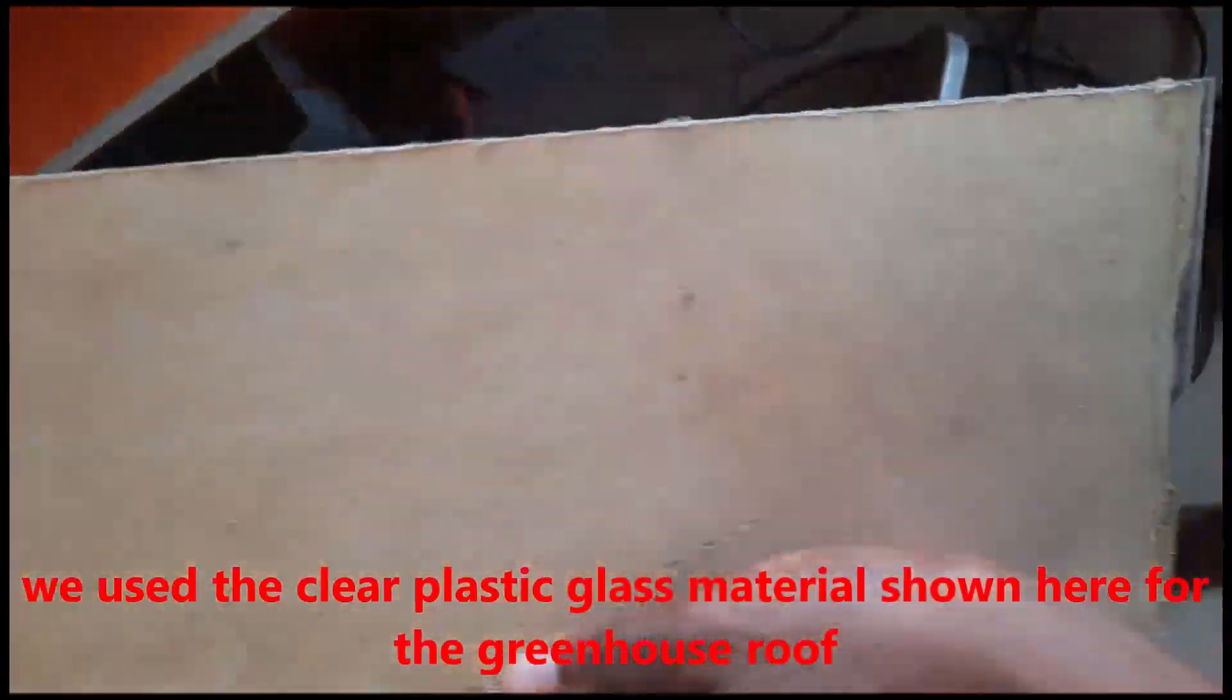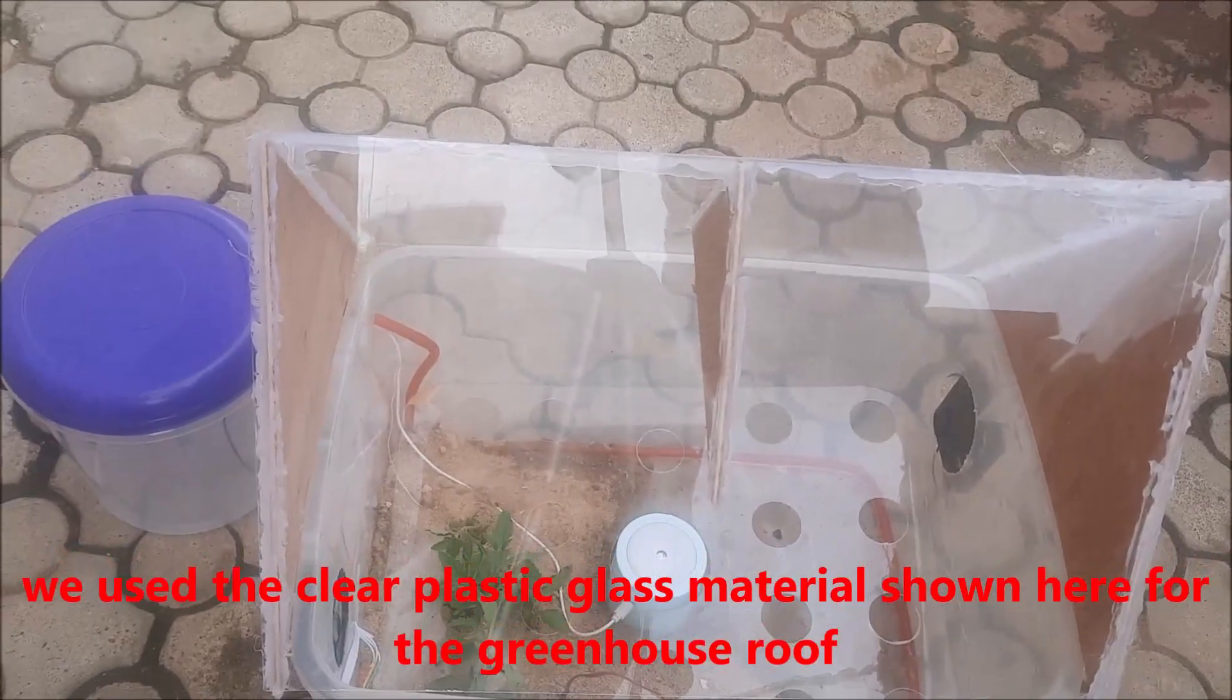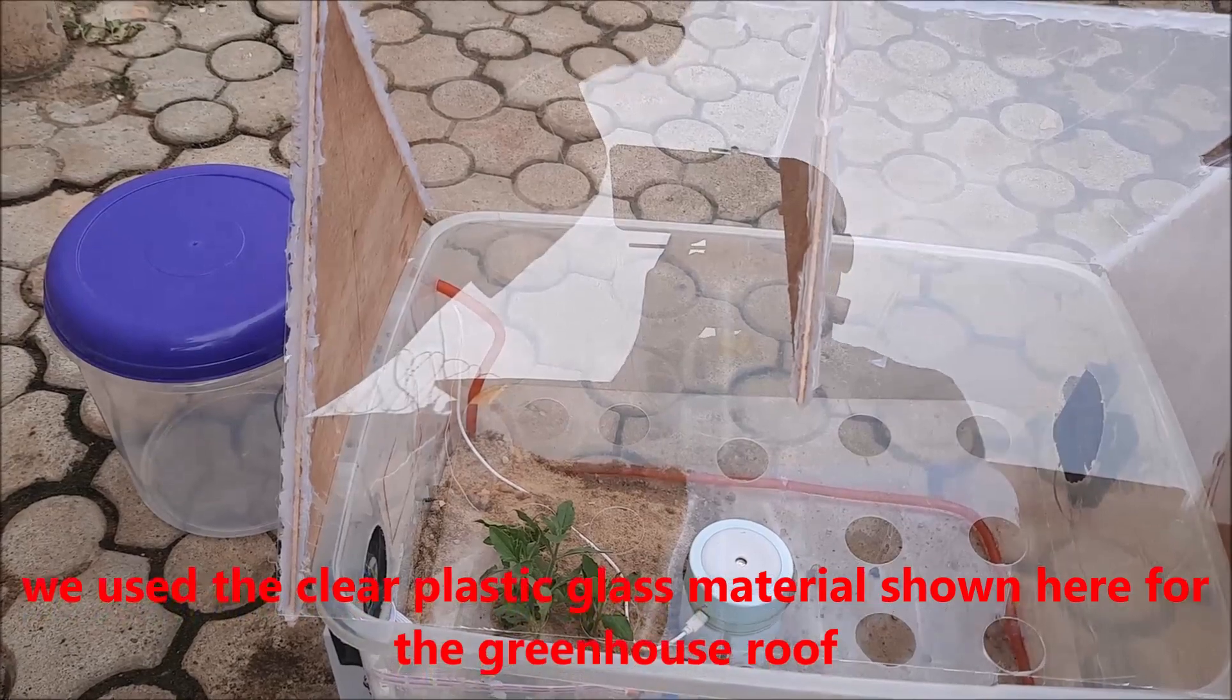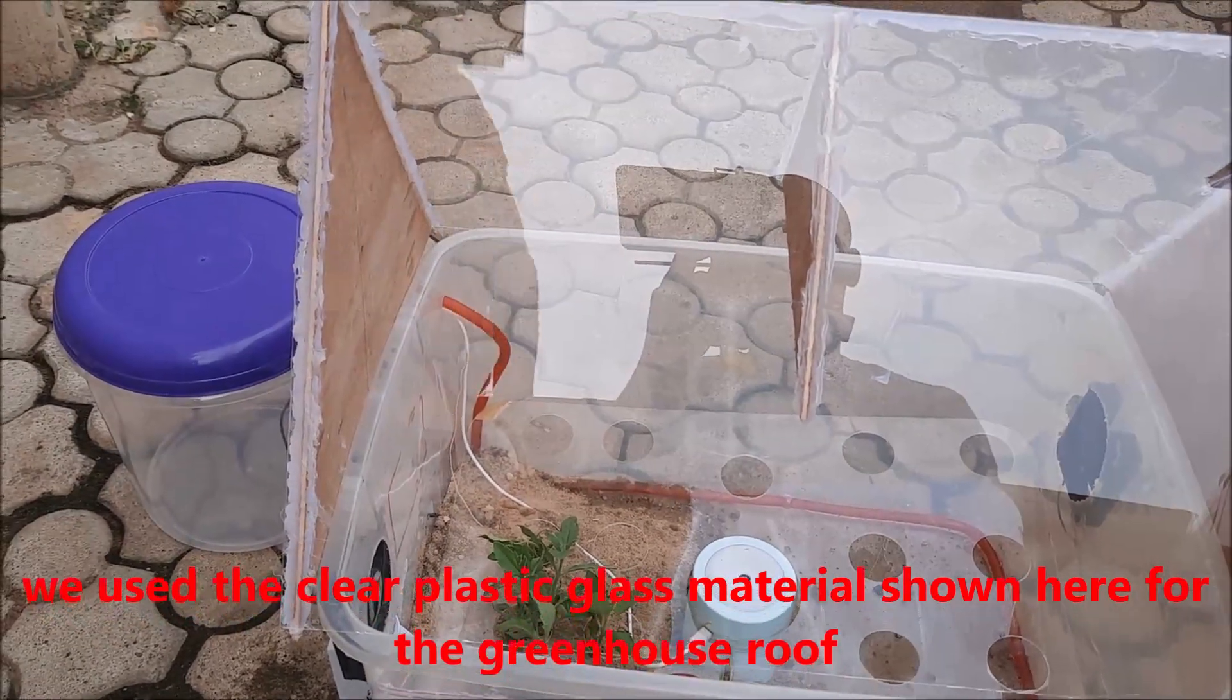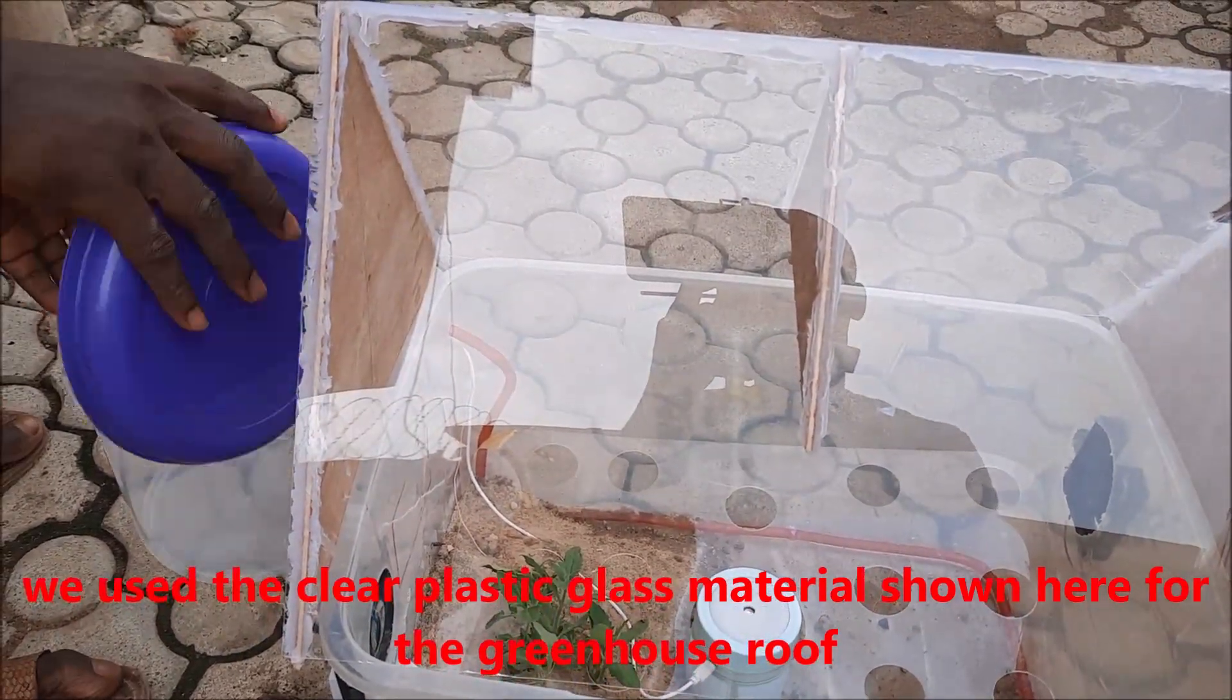To make the roof of the greenhouse model, we used the clear plastic glass material shown here. This allowed for more sunlight into the model and it also allowed us to see the state of the plants in the greenhouse.